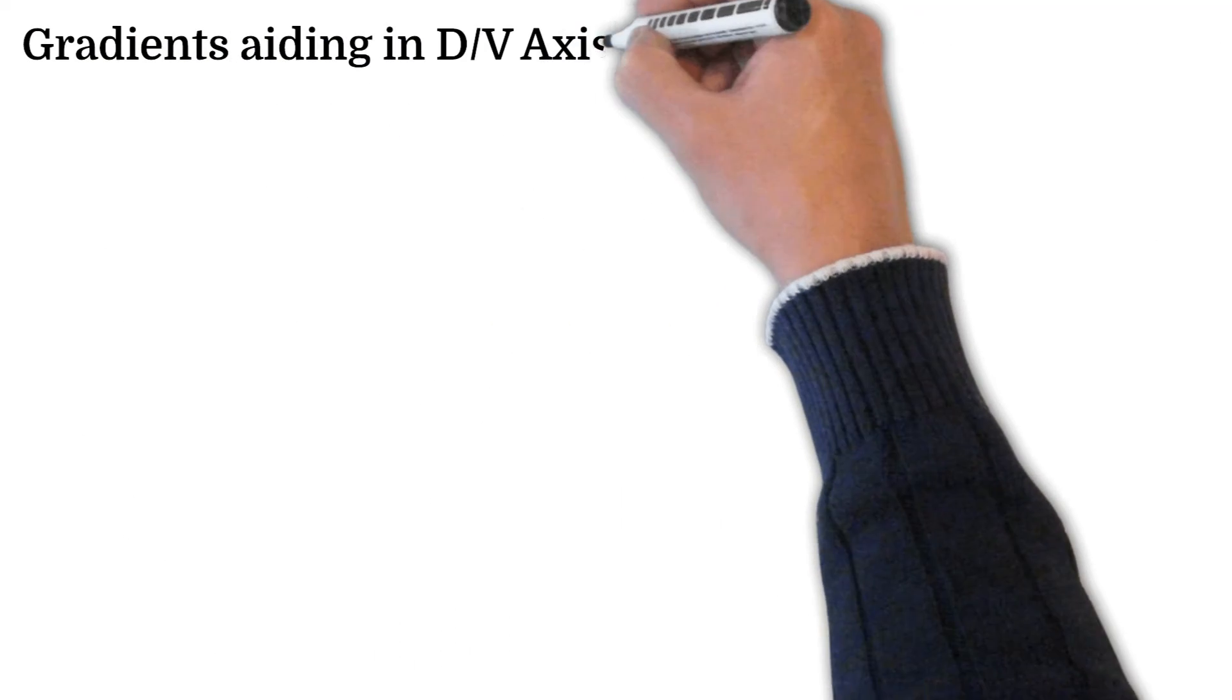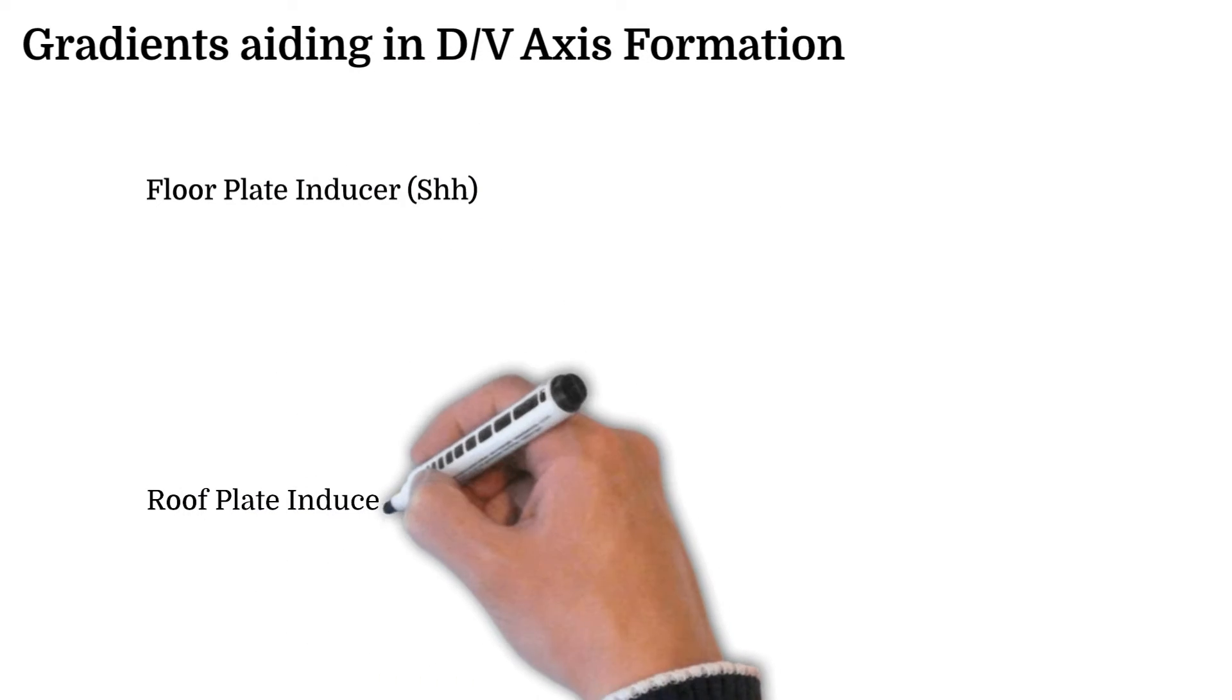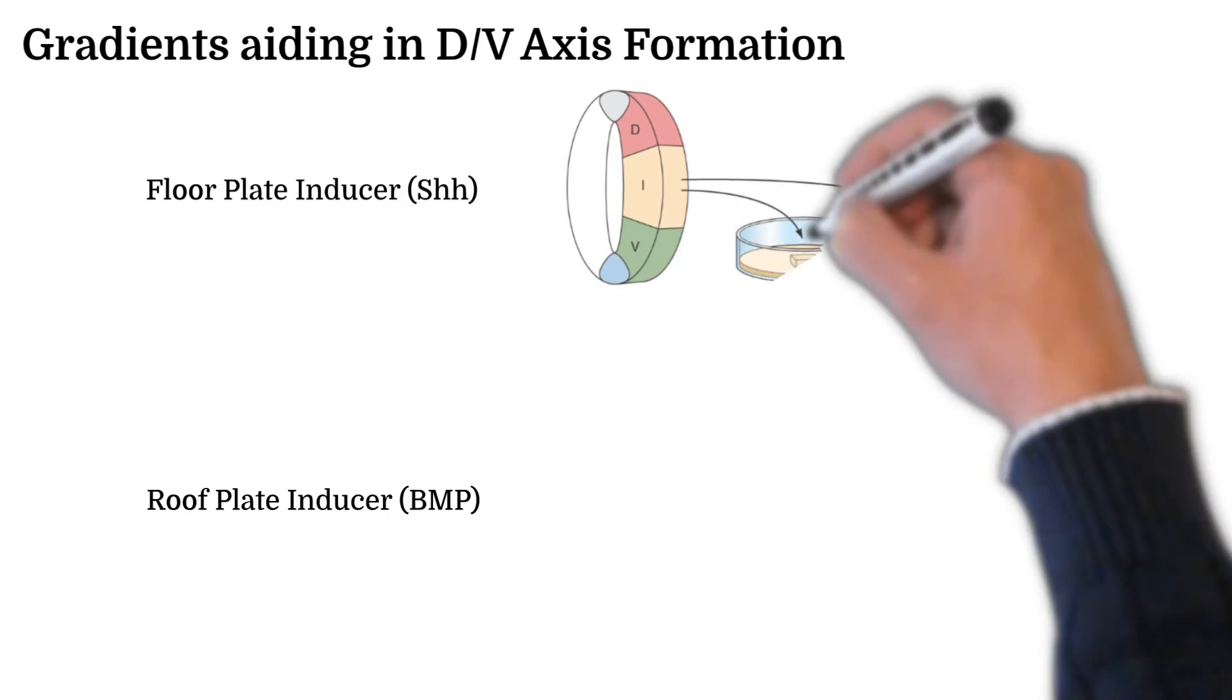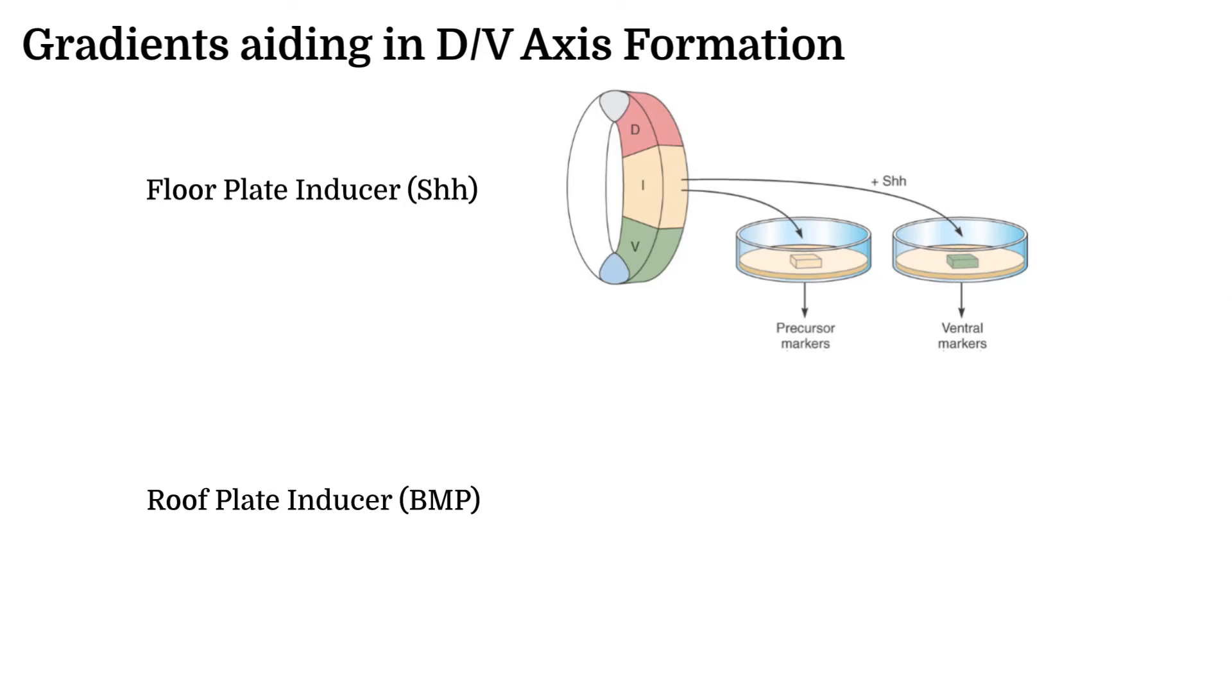In fact, a chemical signal is indeed involved for the formation of both of these dorsalizing features. Sonic hedgehog, or SHH, a protein emitted from the notochord, was found to create a floor plate and ventral markers on the neural tube when used alone.